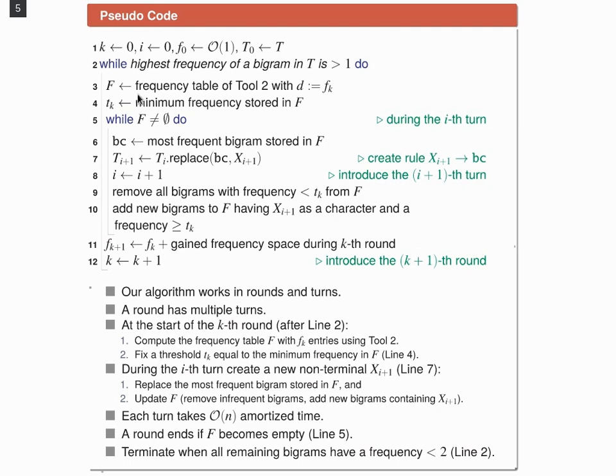At the start of a round, we compute a frequency table f with tool 2 and parameter d set to fk, where fk is the number of bigrams we can store during the k-th round. And it's set to constant in the beginning. Next, we set a threshold tk to the minimum frequency of f. And then we start with a turn.